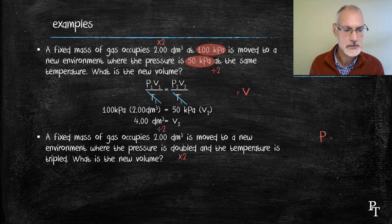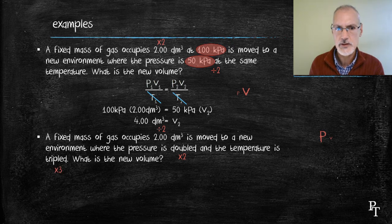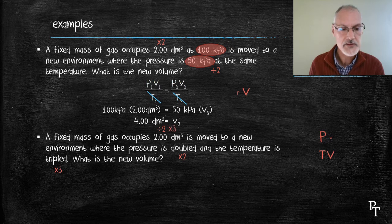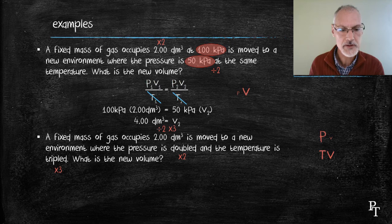Now the effect of temperature. I've tripled the temperature. How are temperature and volume related? Well, they're directly related. If my temperature goes up, then my volume must go up. So tripling the temperature should result in a three-fold increase in the volume. So take your 2 decimeters cubed, divide it by 2, then multiply by 3, and I get a final answer of 3 decimeters cubed.